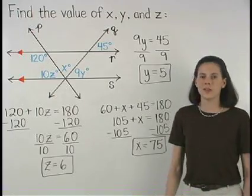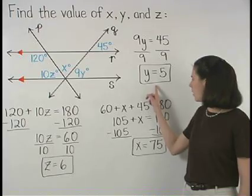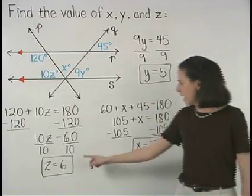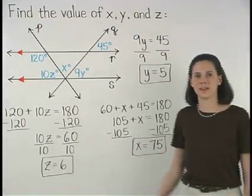So x equals 75, y equals 5, and z equals 6.